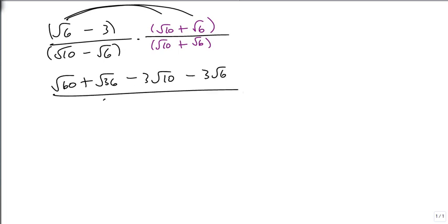√36 - 3√10 - 3√6, all over (√10)² - (√6)². Well, let's simplify what we can. 60 is 4 and 15, so we get a 2√15 now. Notice there's a 2 here and a 2 here, but it leaves the 3 and the 5 in place.